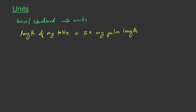In this example, there are two parts to this measurement. One is 5, and second, my palm length. First, the number 5, which is the magnitude of this measurement. And second, my palm length, which is the base or standard used to measure the length of my table. So a physical quantity can be expressed as a combination of magnitude and a unit.